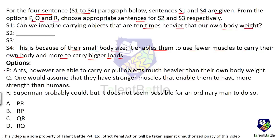The options are: P — 'Ants, however, are able to carry or pull objects much heavier than their own body.' Q — 'One would assume that they have stronger muscles that enable them to have more strength than humans.' R — 'Superman probably could, but it does not seem possible for an ordinary man to do so.' The first sentence asks whether we can carry 10 times our body weight, so immediately after that, statement R must come, because it talks about an ordinary man not being able to do it, but Superman probably can. So S1 and R are related — both talk about human beings. Statements P and Q are talking about ants.